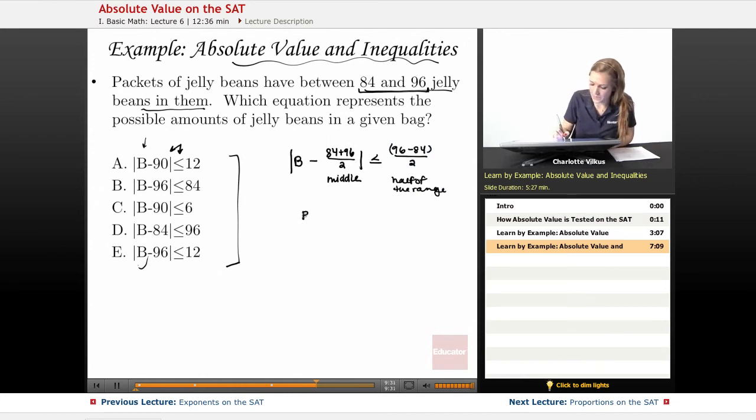Here we're going to take 96, subtract 84 from it, and then do half of that range. In this case we're going to get b minus 90. The absolute value of that is going to be less than or equal to 6, because we basically have 12 over 2 here. And here we're going to end up with 180 over 2. So this is our equation.